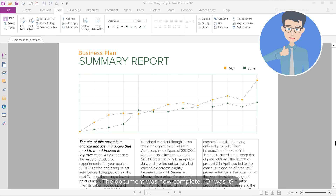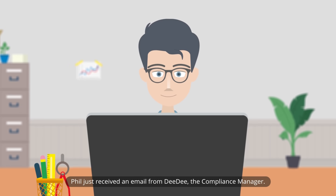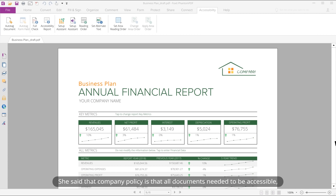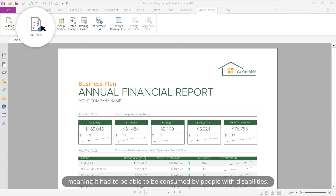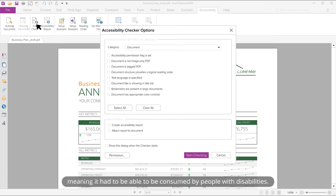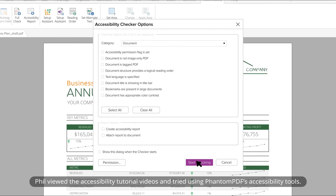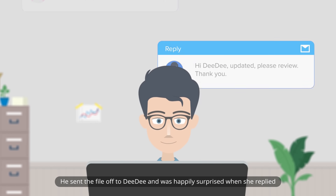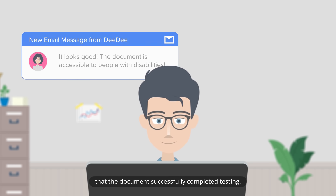Phil received an email from Didi, the compliance manager. She said that company policy required all documents to be accessible — meaning they had to be consumable by people with disabilities. Phil viewed the accessibility tutorial videos and tried using Fenton PDF's accessibility tools. He sent the file to Didi and was happily surprised when she replied that the document had successfully completed accessibility testing.